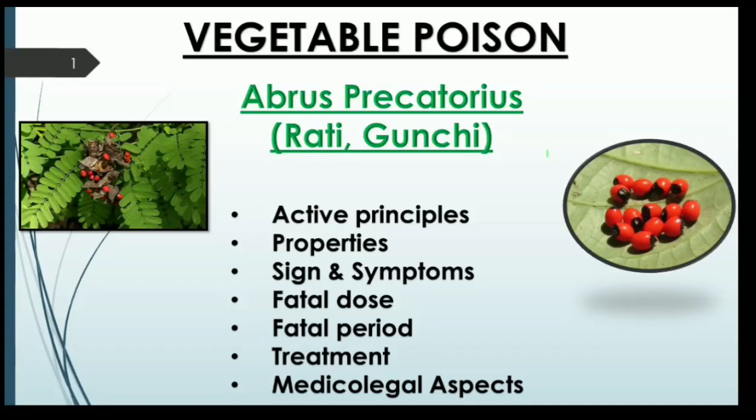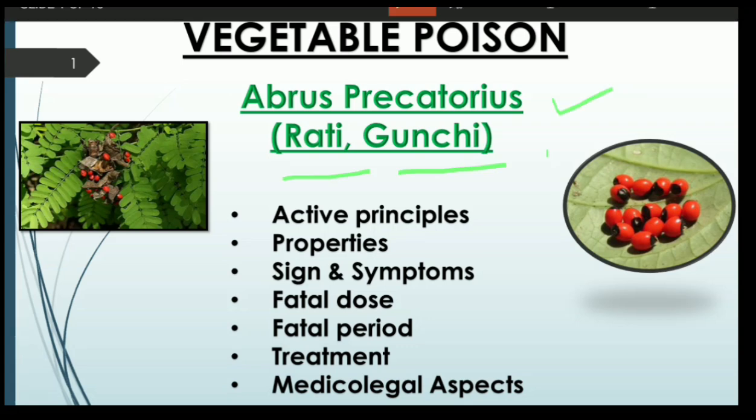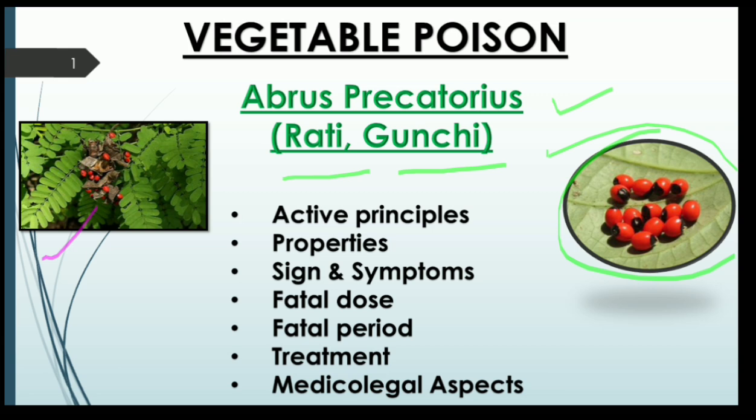Hello everyone, I hope you guys are doing absolutely fine. Let us study Abrus precatorius. We have already covered the rest of the vegetable poisons in our previous lecture — go check out the playlist. Abrus precatorius is commonly known as rati or gunji. These are the seeds of Abrus precatorius, which are the extremely poisonous portion of this entire plant.